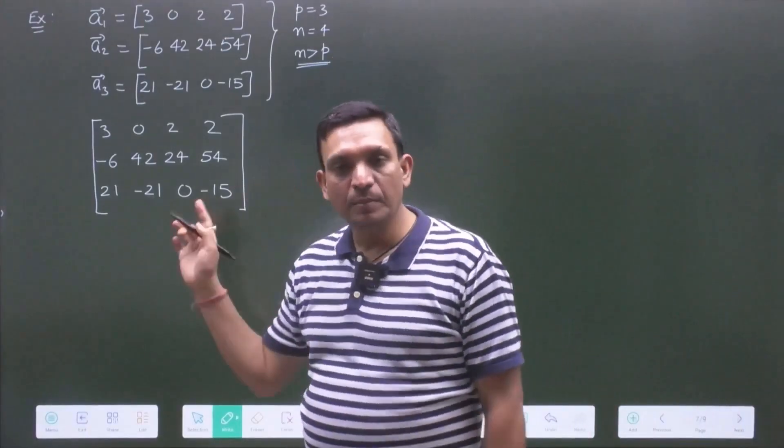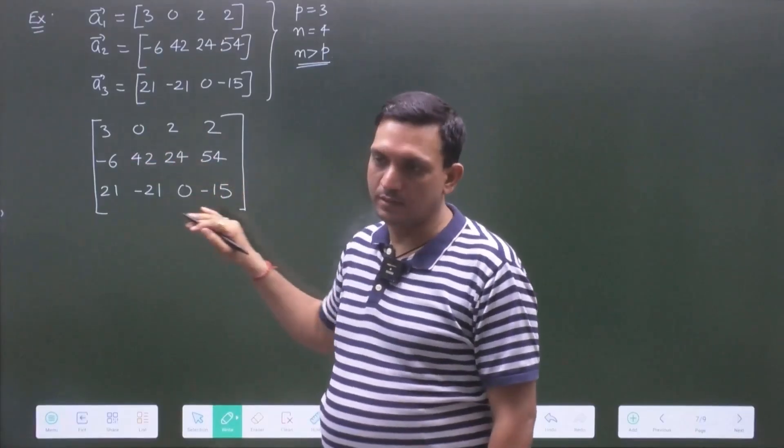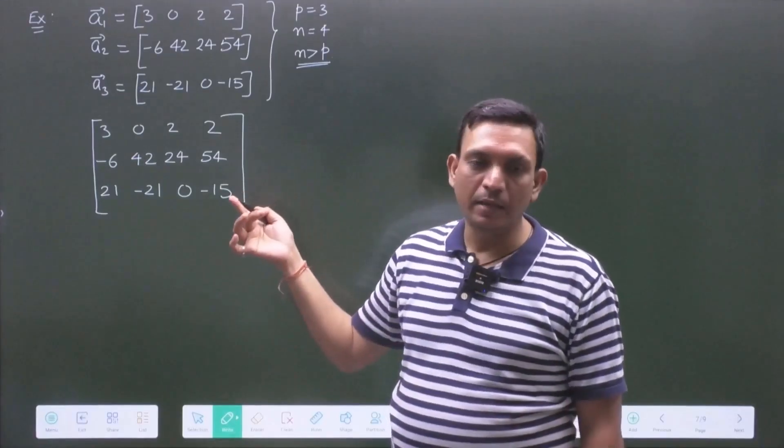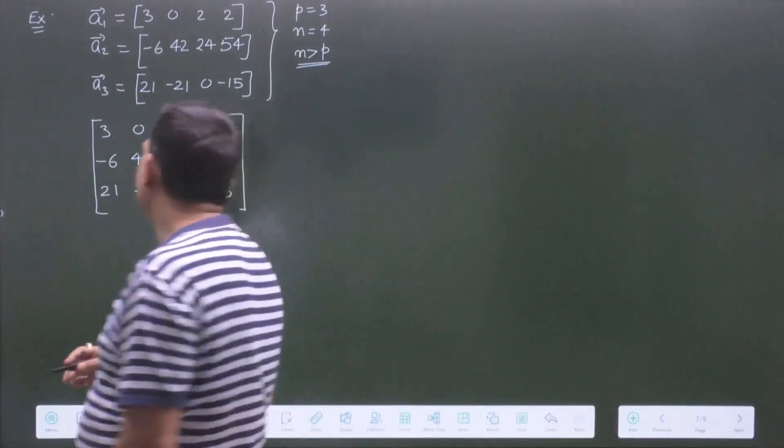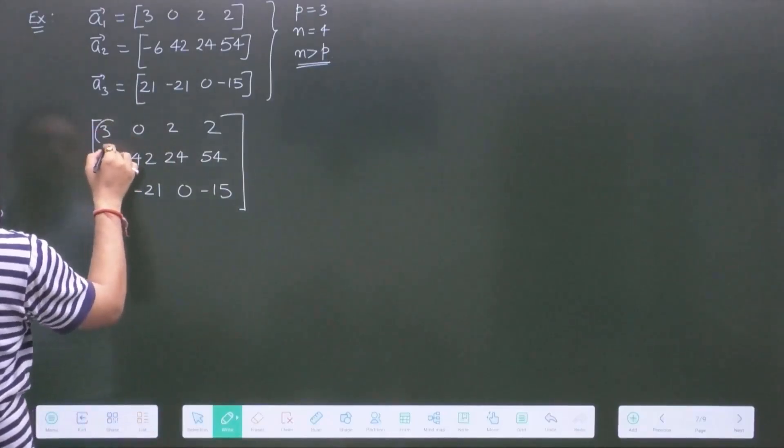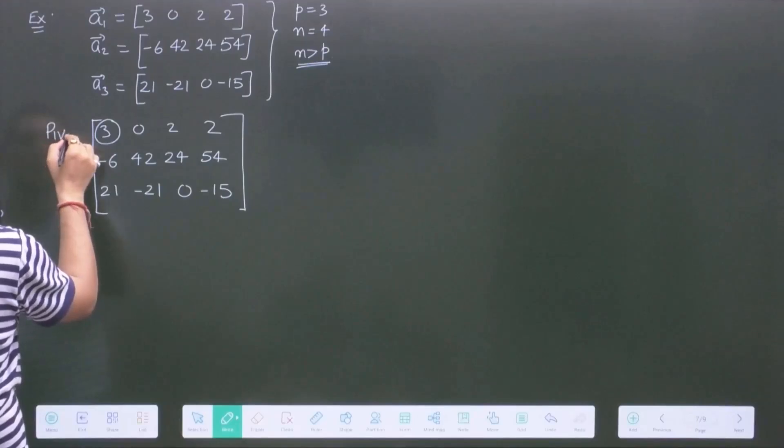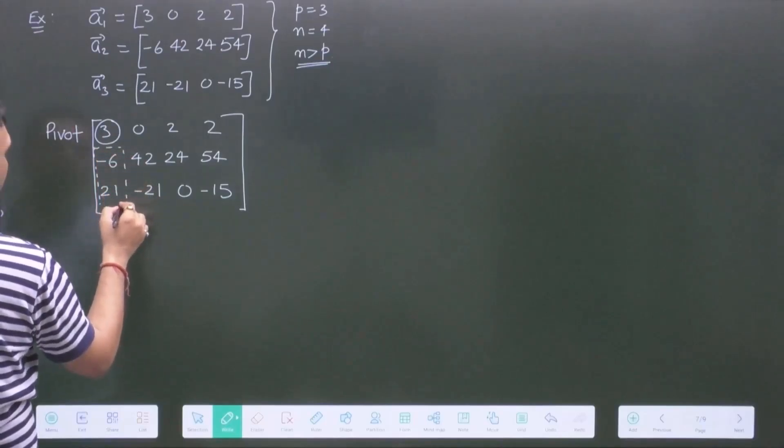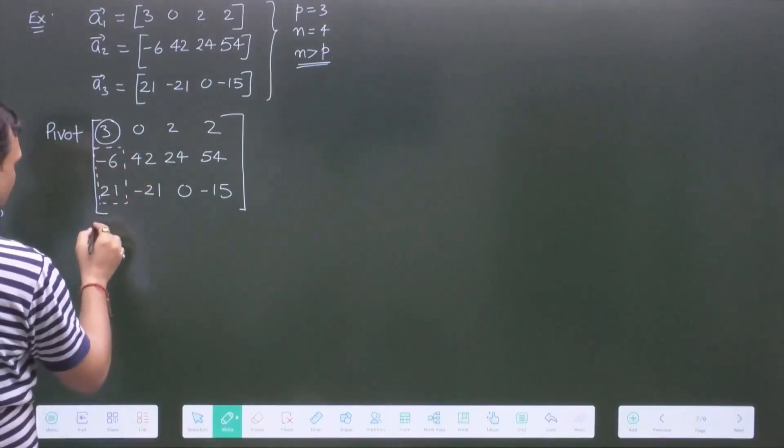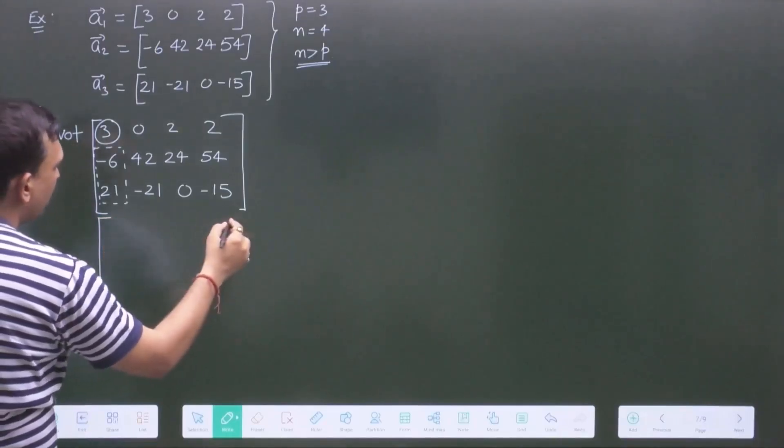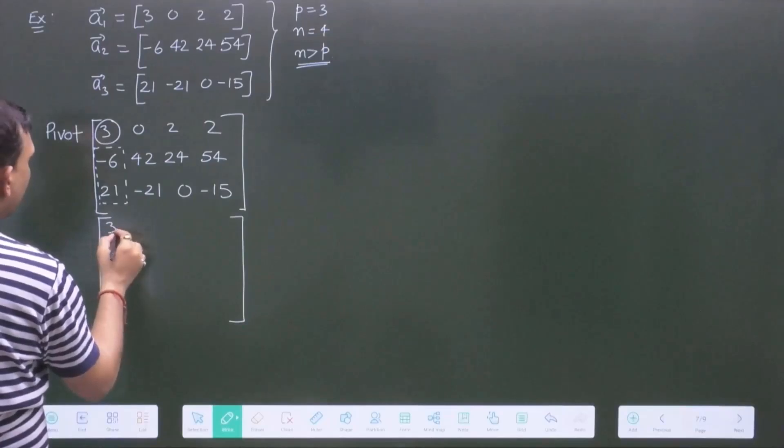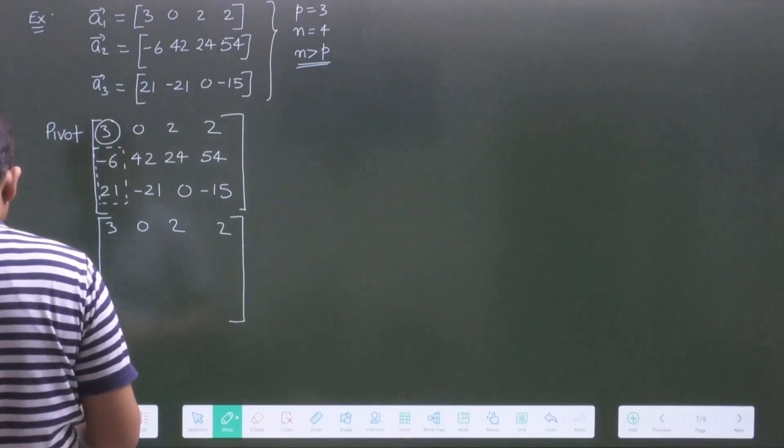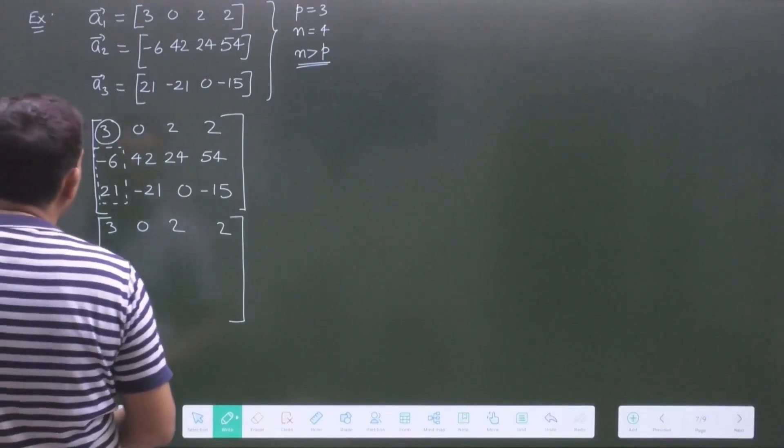So, how we will get the maximum number of linearly independent? Again, we will apply elementary row operation. So, you have to see this is the pivot row and pivot element and we want to eliminate this. So, this is 3, 0, 2 and 2, and this will be R3 plus 2R1.